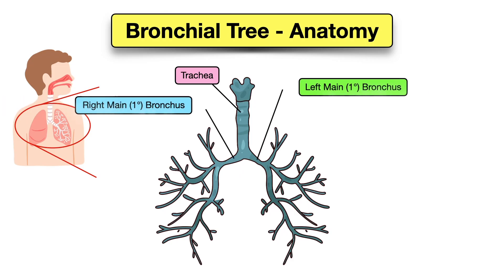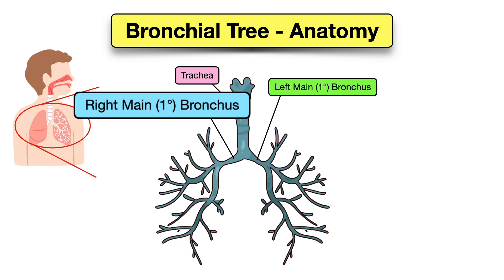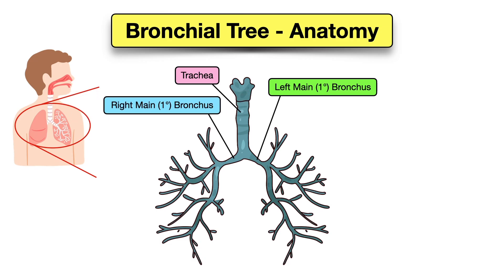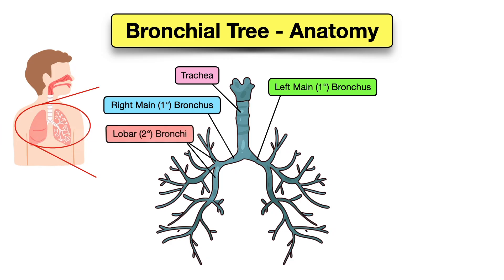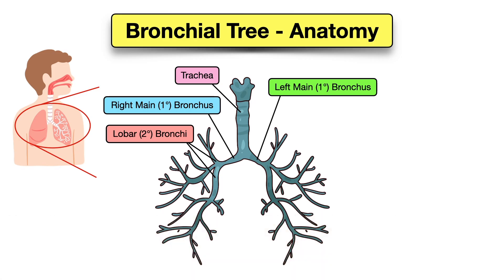The trachea then divides into the right and left main bronchi. The right main bronchus allows air to enter the right lung, and the left main bronchus allows air to enter the left lung. These are also called the primary bronchi. The right and left main bronchi then divide further into the lobar bronchi — also called the secondary bronchi — which supply air to the different lobes of the lungs.